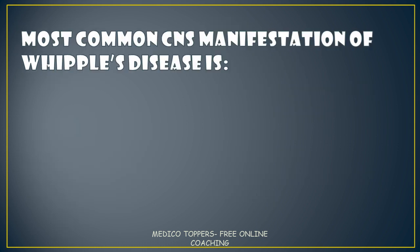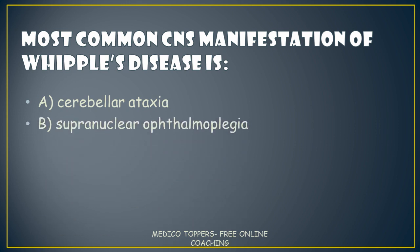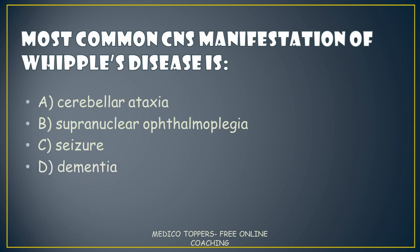Today's MCQ: The most common CNS manifestation of Whipple's disease is — (A) Cerebellar Ataxia, (B) Supranuclear Ophthalmoplegia, (C) Seizures, or (D) Dementia. Kindly comment your answer below.